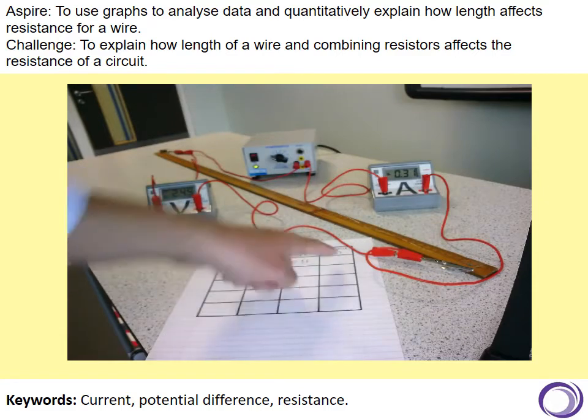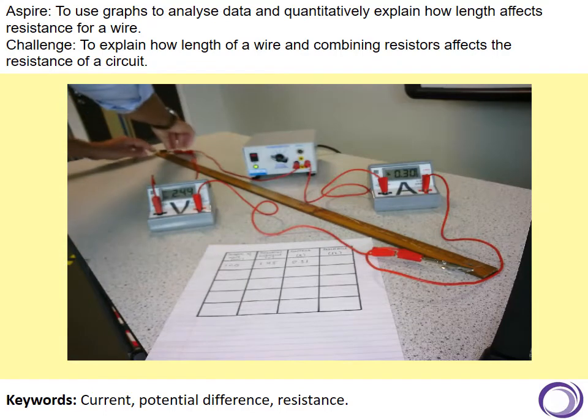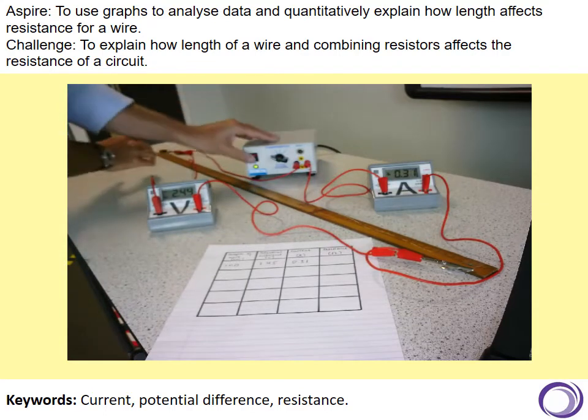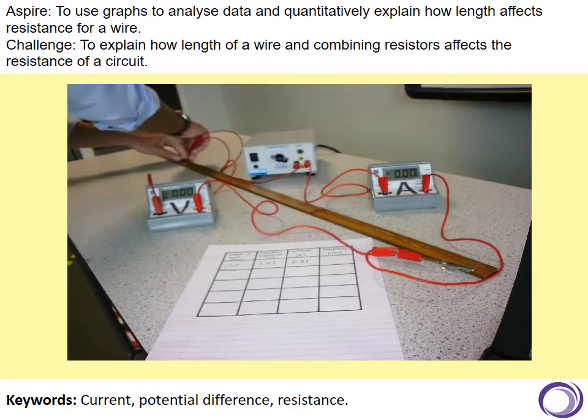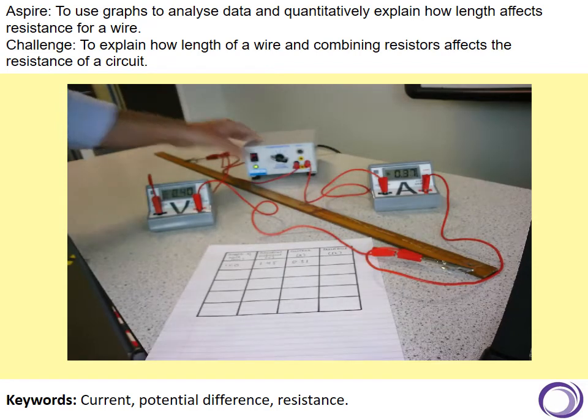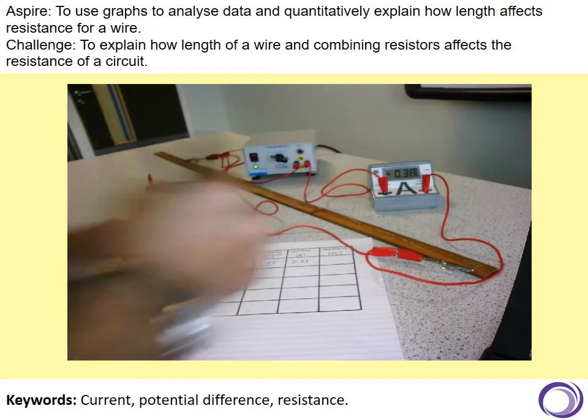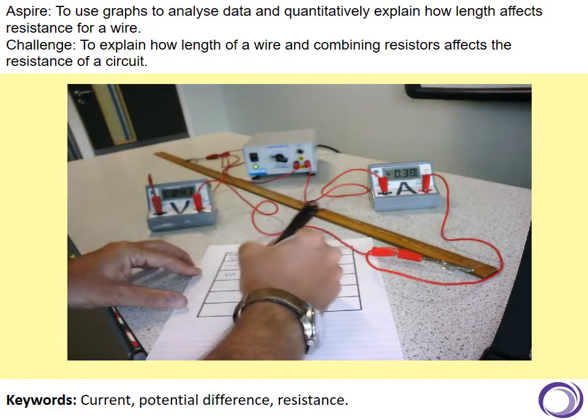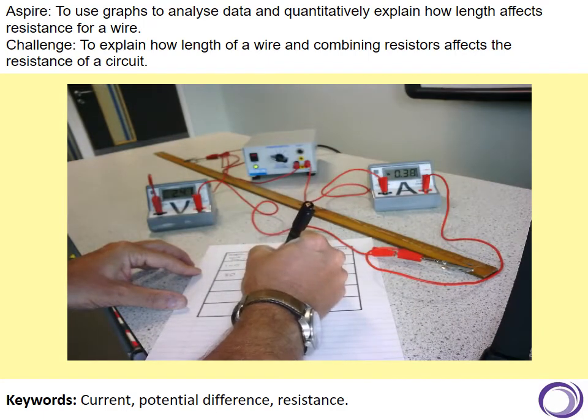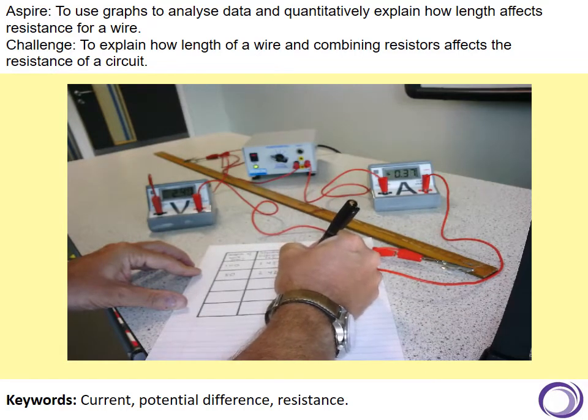We're going to leave the resistance column until the end once we've got all of our other results. So, if we move the, we switch the power off, we move the crocodile clips to 80, so we're moving them every 20 centimeters and then we turn the power pack back on. And as you can see, we've got a different reading of 2.42 of voltage and a current reading of 0.38.